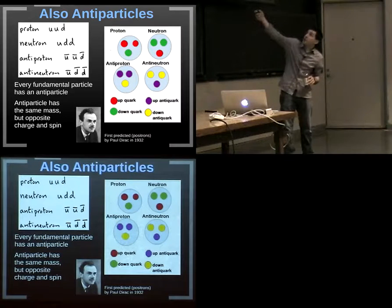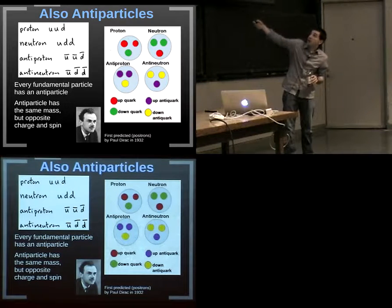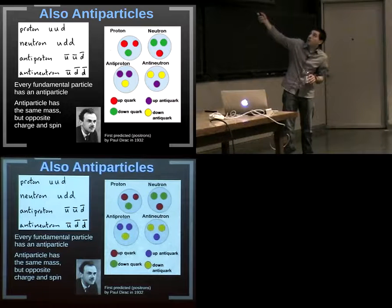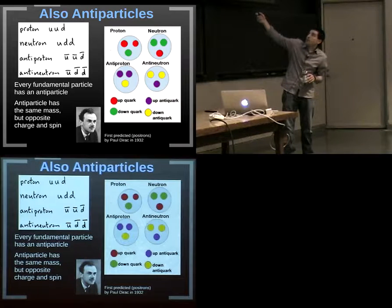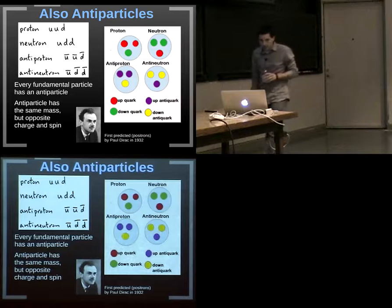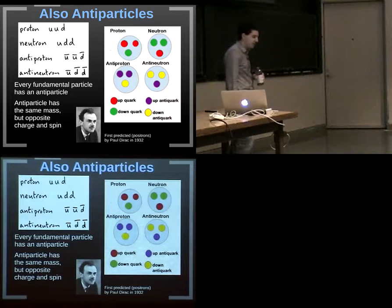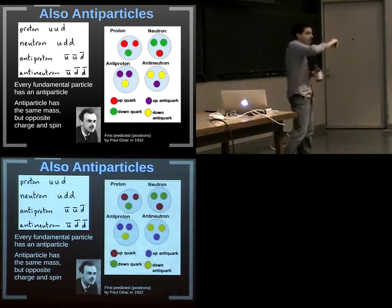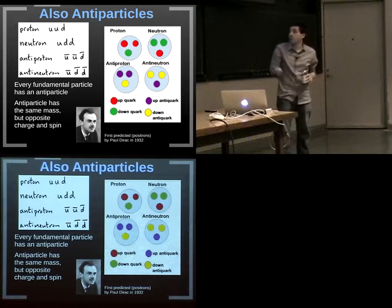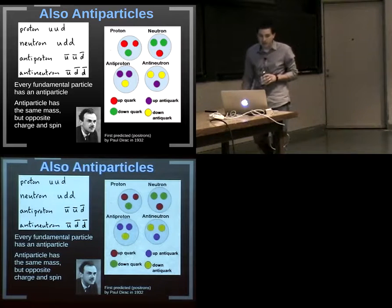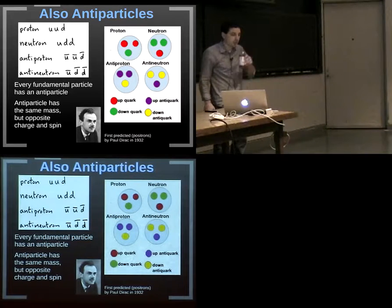People have searched for antimatter in our universe for these reasons. A proton has charge plus one from two-thirds, two-thirds, and minus one-third. An antiproton has charge minus one. This was first predicted in the case of positrons — anti-electrons — by Paul Dirac in 1932.